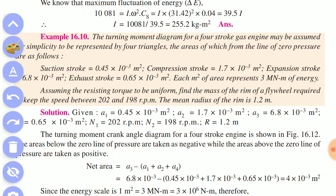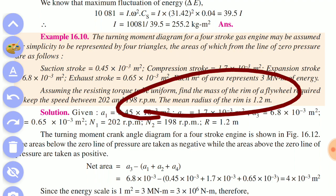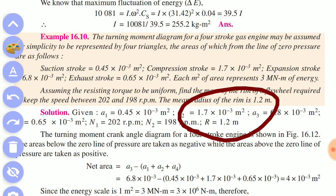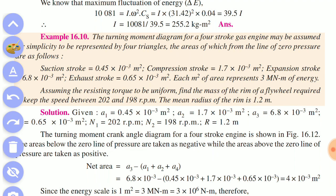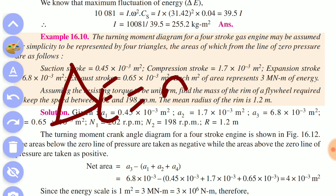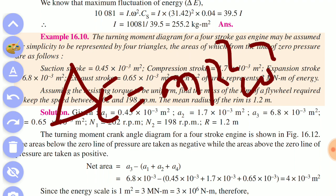The mean radius R is 1.2 and k is 1.2. Now if we find the mass, delta U is equal to m × r² × omega² × Cs.